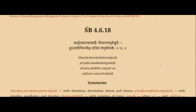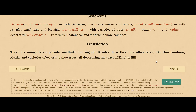Harjura maratka maratya, priyala madhukai gundai. Dhrumajati viranyasya, raji tamvenu ki chakai. Translation by Srila A.C. Bhaktivedanta Swami Srila Prabhupada: There are mango trees, priyala, madhukai, and inguddha. Besides these, there are other trees like thin bamboos, chakka, and varieties of other bamboo trees, all decorating the tract of Kailash hill.